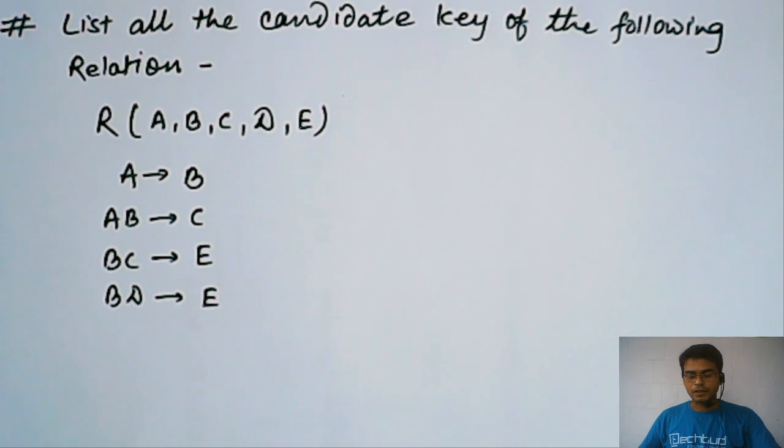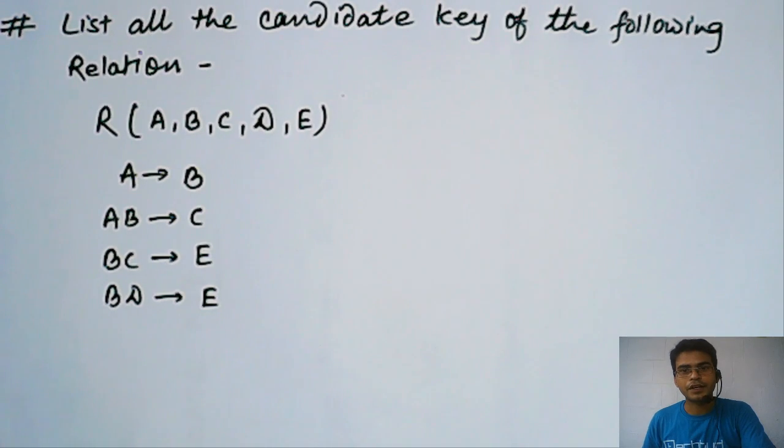Hello Toots. Welcome back to tech2d.com. We have another example to solve here which is finding out the candidate key of a given relationship.